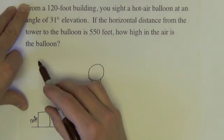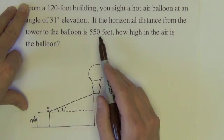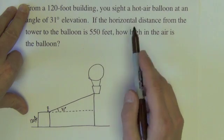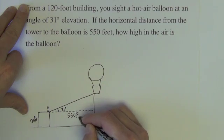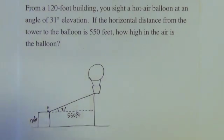And so there's my 31 degree angle of elevation. It says from the building to the balloon is 550 feet, the horizontal distance. So this is 550 feet.